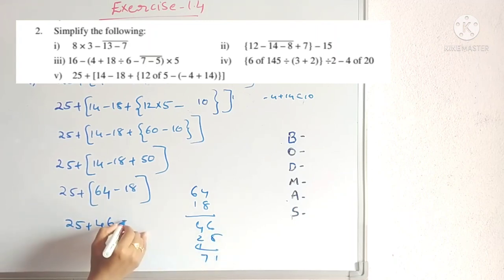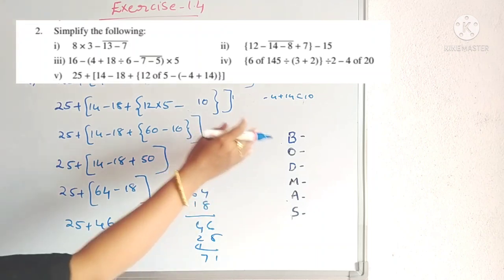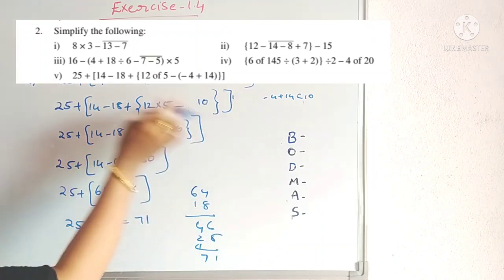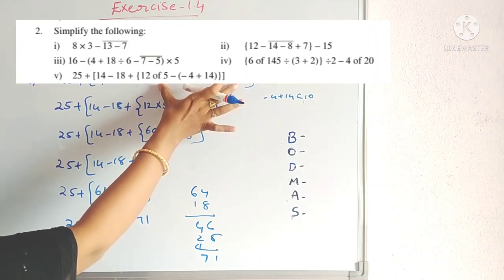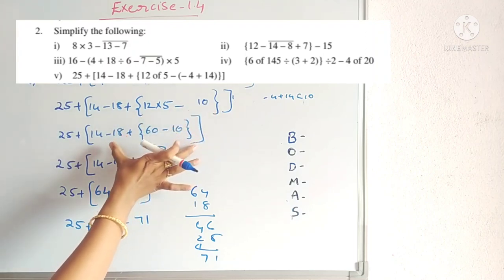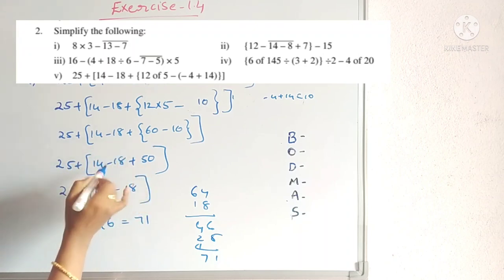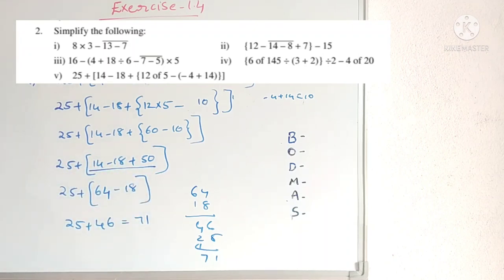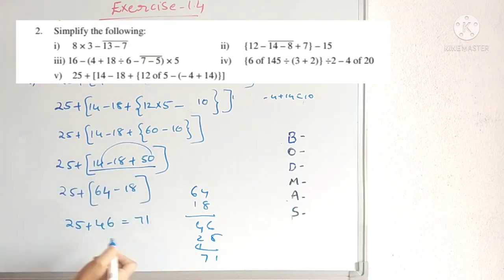The answer is 71 for this problem. You have to follow the BODMAS order each and every time. In this problem, first we simplified the simple bracket, then the curly bracket, then the square bracket. Whenever we simplify, first we add and then we subtract. These are the solutions for the second problem.